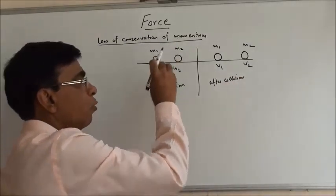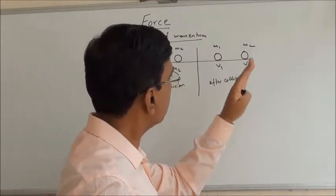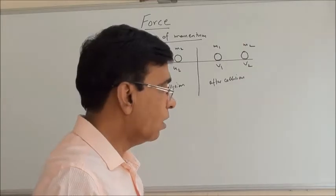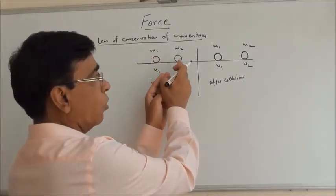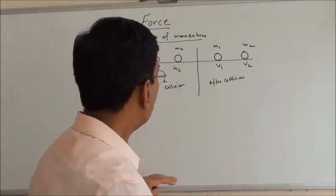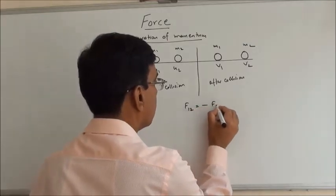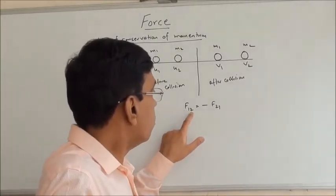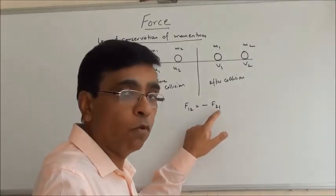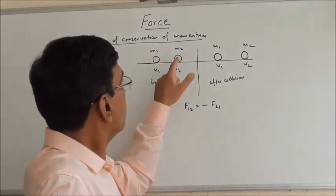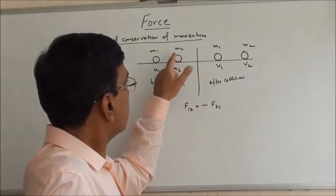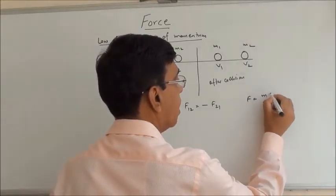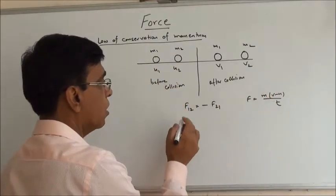Now applying the law of conservation of momentum to a collision. Before collision, m1 is moving towards m2. After collision, the first body has velocity v1 and the second has velocity v2. By Newton's third law — action and reaction — the force m1 applies on m2 is equal and opposite to the force m2 applies on m1. Using force equals mass times change in velocity divided by time.